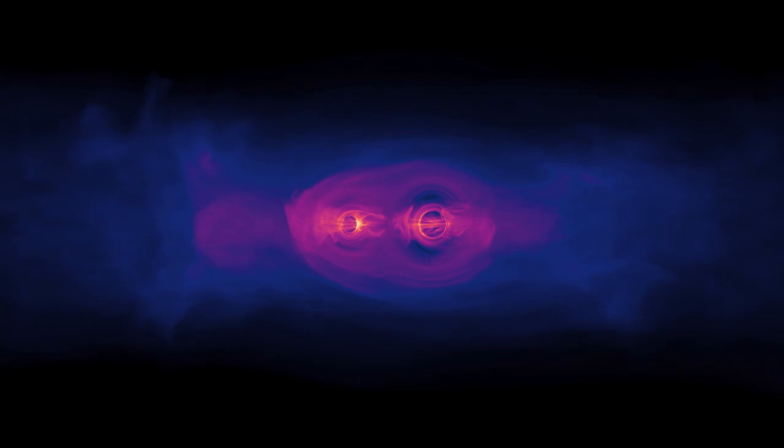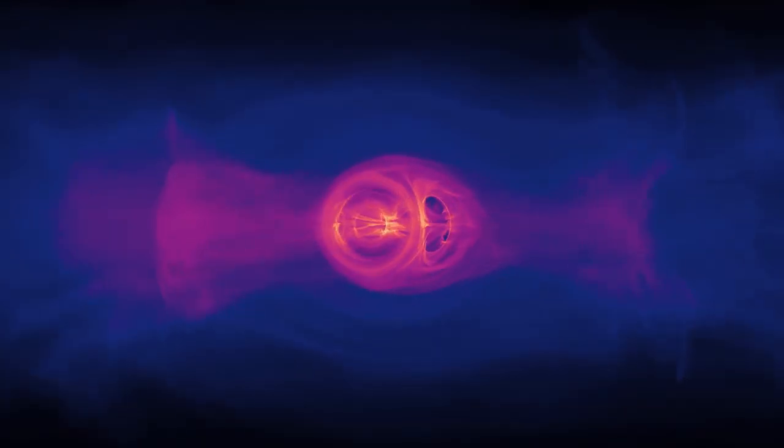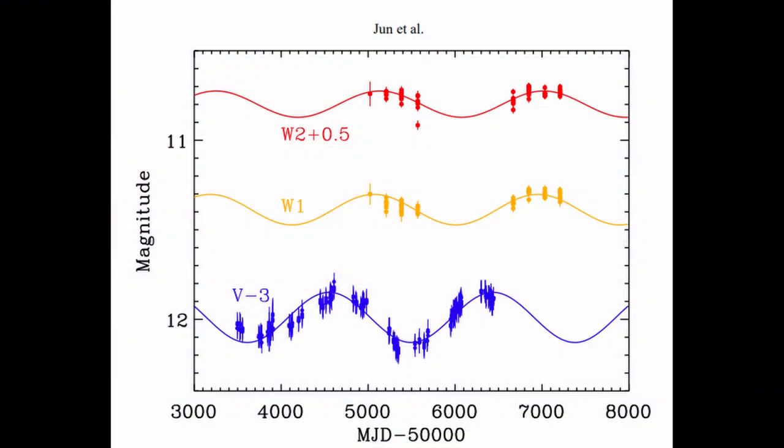Using the Catalina real-time transient survey, they were able to detect a strong, smooth periodic signal in the optical and infrared light. The periodic signal was something that they had not seen before in quasars and they suggested that this indicated that there must be a binary pair of black holes. And they observed that this periodicity was the same across all wavelengths. The signal seemed to indicate a five-year periodicity based on 20 years of data.